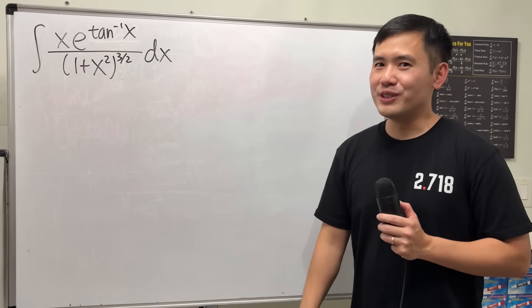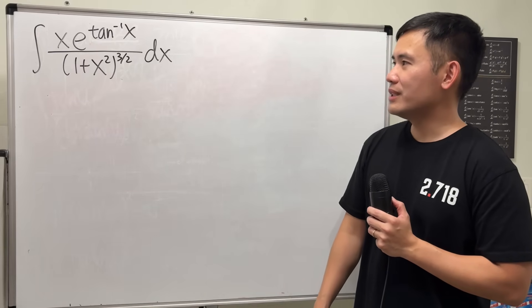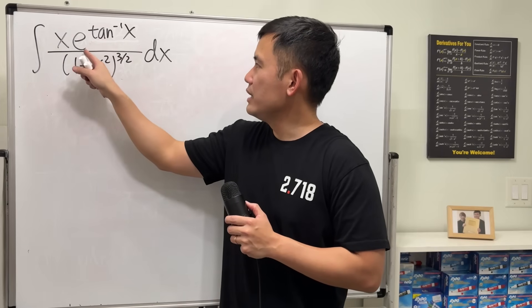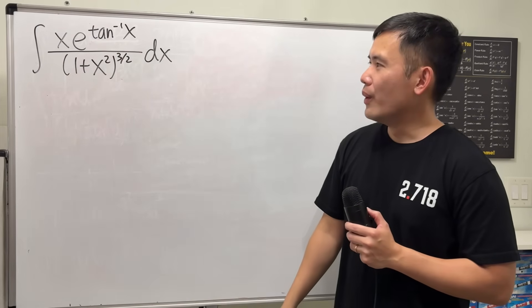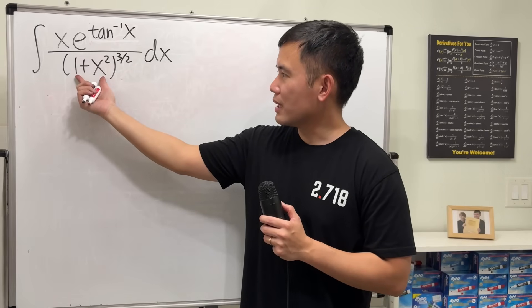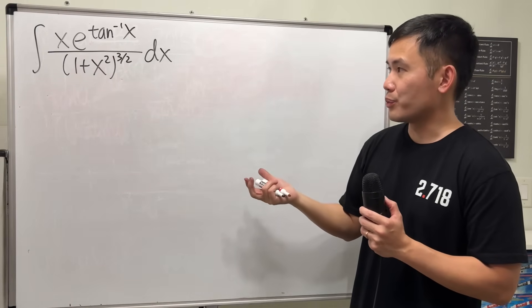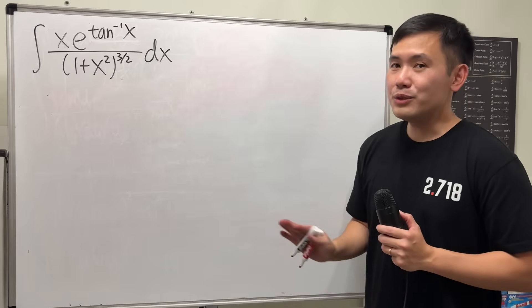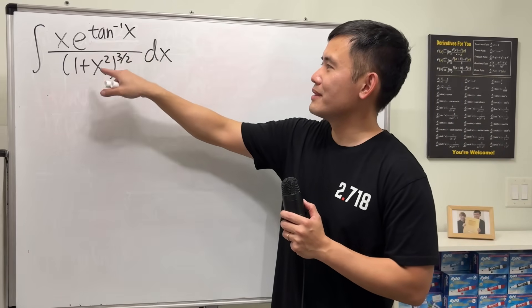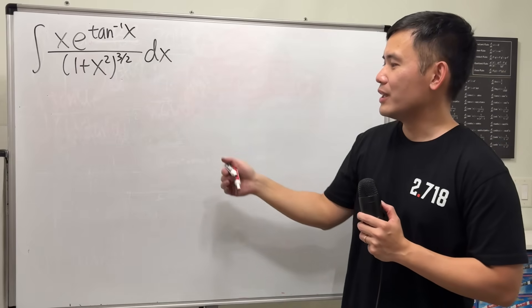Surprisingly, it's doable, which is very nice. You might break it down with e to the inverse tangent of x, or start with u equal to 1 plus x squared as the inside of the parentheses. But I didn't try that, because I think the exponential part is more dangerous. So I started with u equal to that instead.